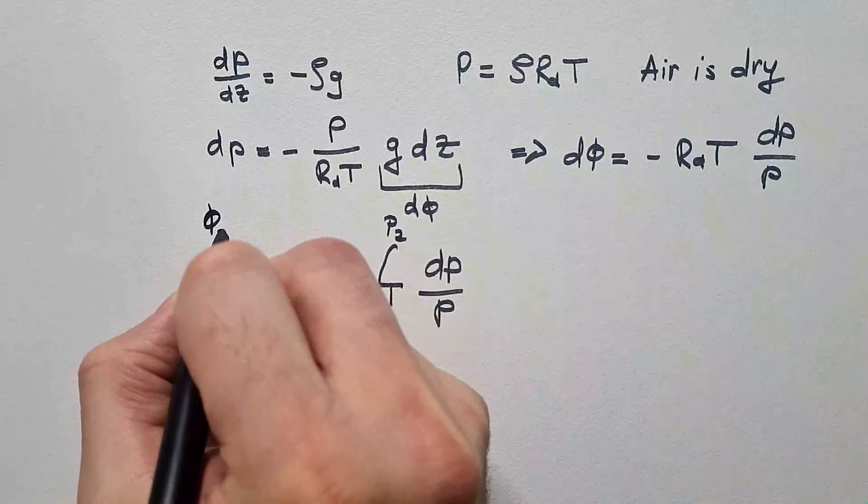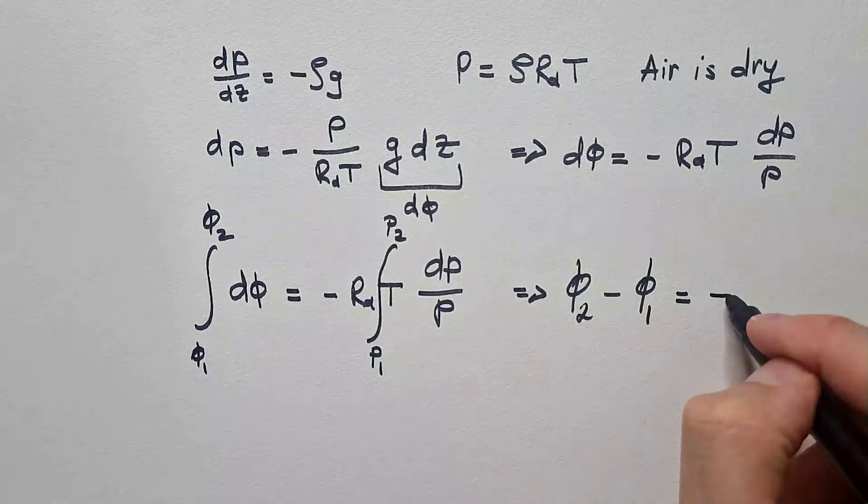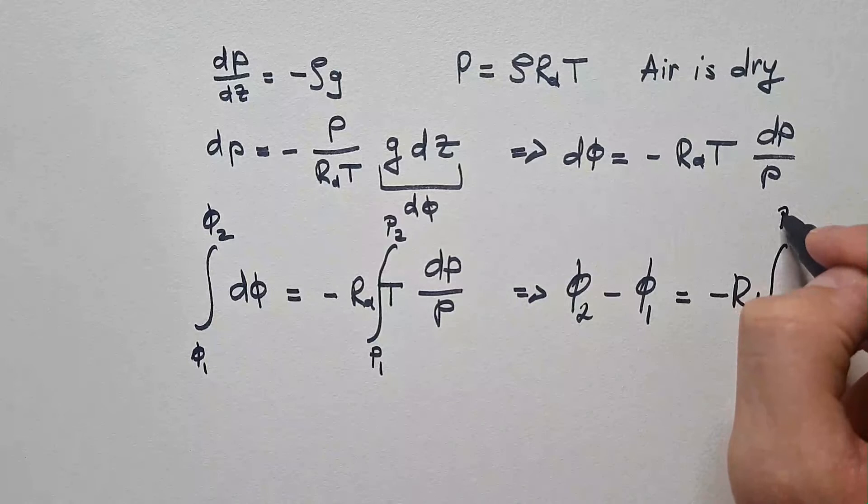The solution of the left side of this integral is phi2 minus phi1, and that is equal minus Rd integral P1 P2 T dp over p.